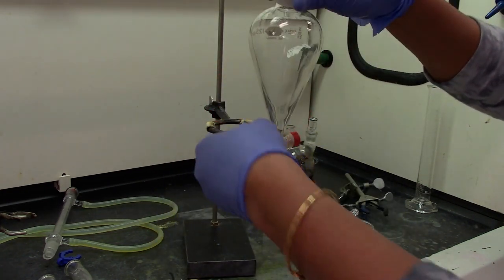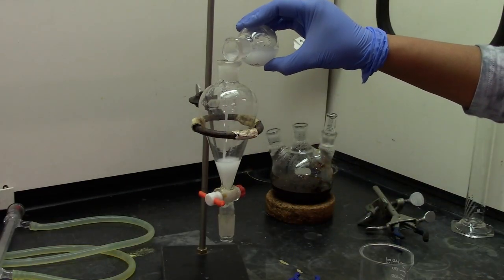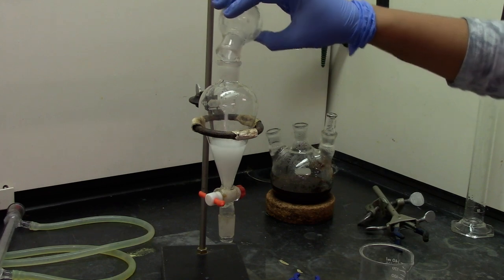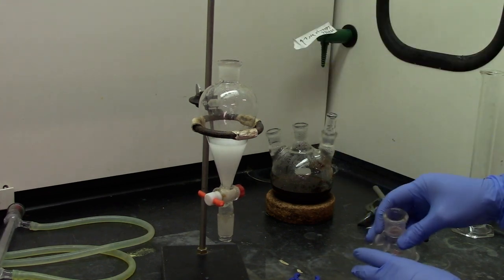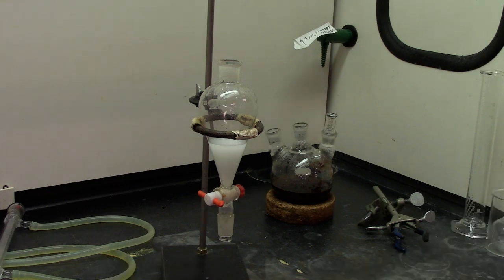Make sure the separatory funnel is closed before you add the solution. Pour the collected solution into a separatory funnel and add 10ml of dichloromethane or methylene chloride.